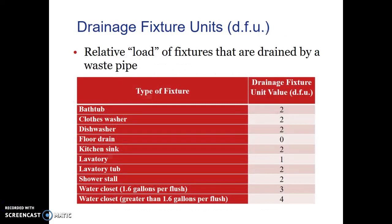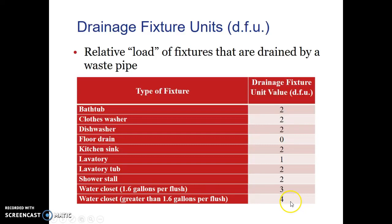Here on slide number 10, we learn about what are called drain fixture units. These are the relative load of fixtures that are drained by a waste pipe in a building. Drain fixture units: a bathtub is two fixture units, dishwashers, clothes washers, a floor drain has no value whatsoever. Laboratory sinks and hubs are also listed.